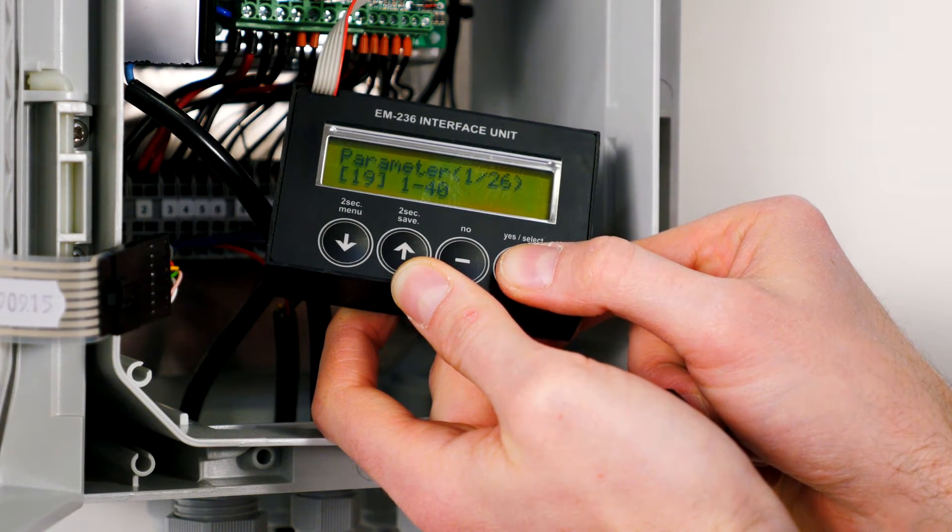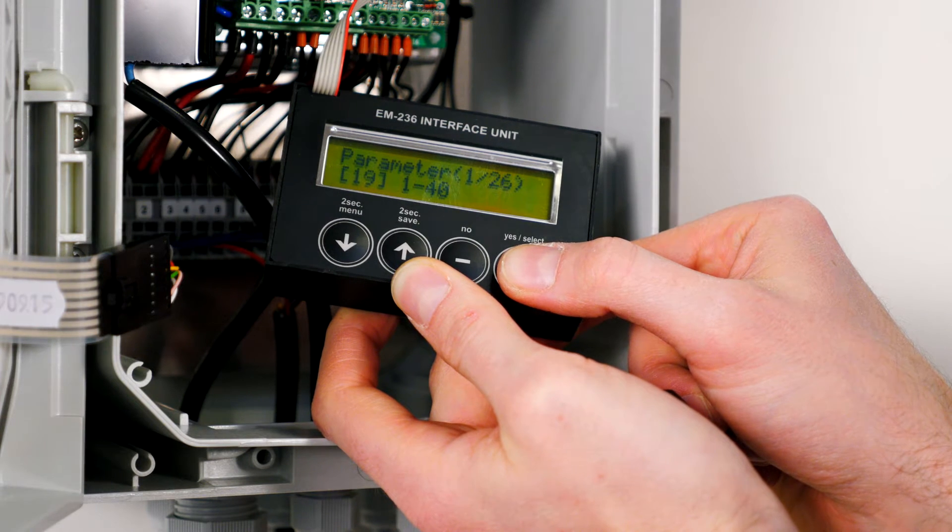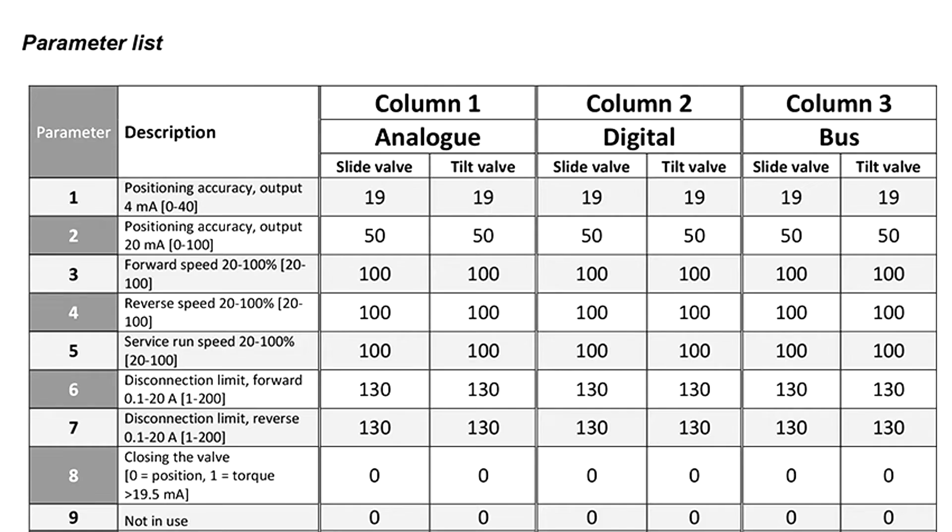Now press yes for load and edit. Now check that all parameters are as specified in this table as to the analog side valve. Here you must pause the film and run through parameters 1 to 26 step by step.